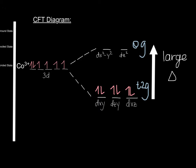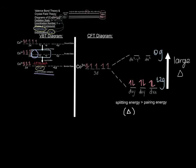This would also demonstrate that there is a large repulsion between the ligand's electrons and the d electrons of cobalt, particularly in the dz² and dx²−y² orbitals. This crystal field diagram also demonstrates how splitting energy is greater than pairing energy. By looking at the two diagrams side by side, you can see that in the crystal field diagram, the 3D orbital of cobalt 3+ matches the valence bond theory diagram's 3D orbital of cobalt 3+ in the ground state.